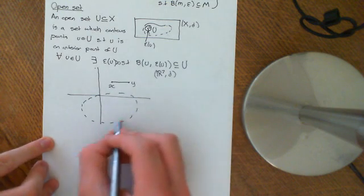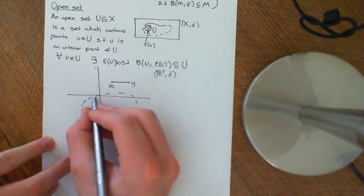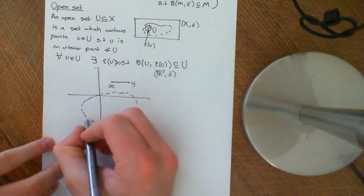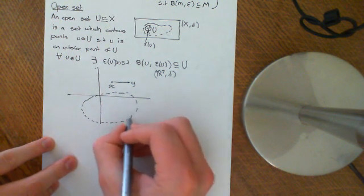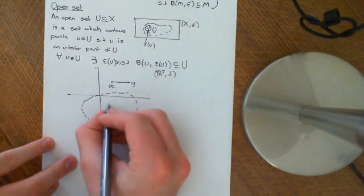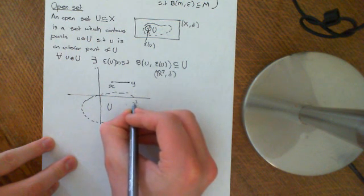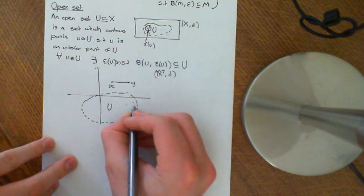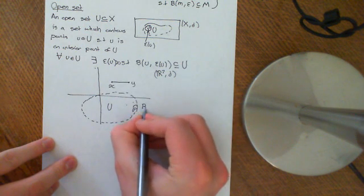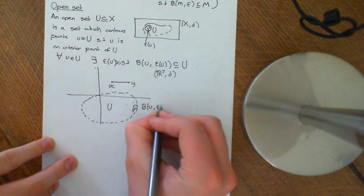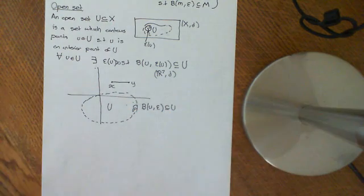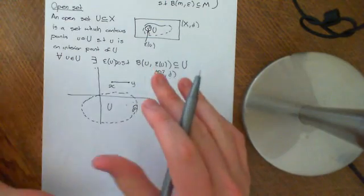Let's understand why this blob I've drawn here is an open set. It does not contain the boundary. Any point as close as you like to this boundary will be in the set, but the actual boundary is not contained within the set. So if I take any little u that can get as close to this boundary as you possibly like but not actually go on to the boundary, there will exist a ball around that point u of radius some tiny little epsilon such that that ball is still completely contained within U. I can make the radius of the ball small enough that it's still contained in U.